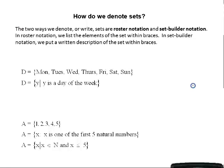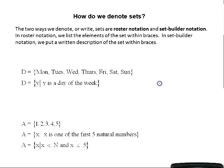Let's look at a set. Set D has the following elements or members: Monday, Tuesday, Wednesday, Thursday, Friday, Saturday, Sunday. Those are the days of the week and each individual day is listed — that's roster notation, when individual elements are listed. We could describe this set in words because this set is, again, the days of the week.